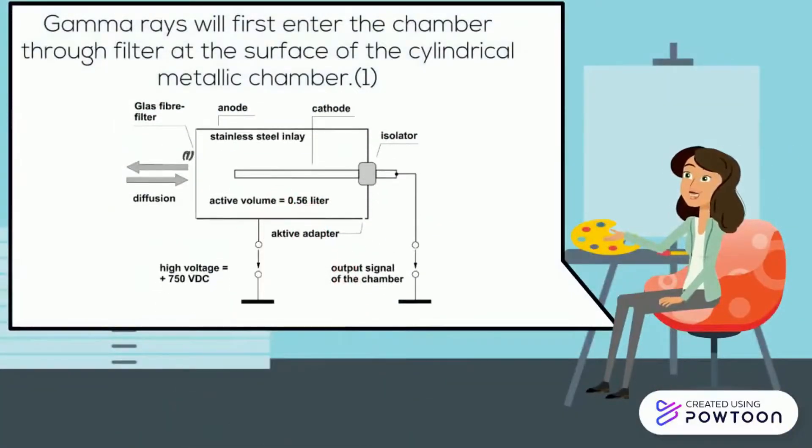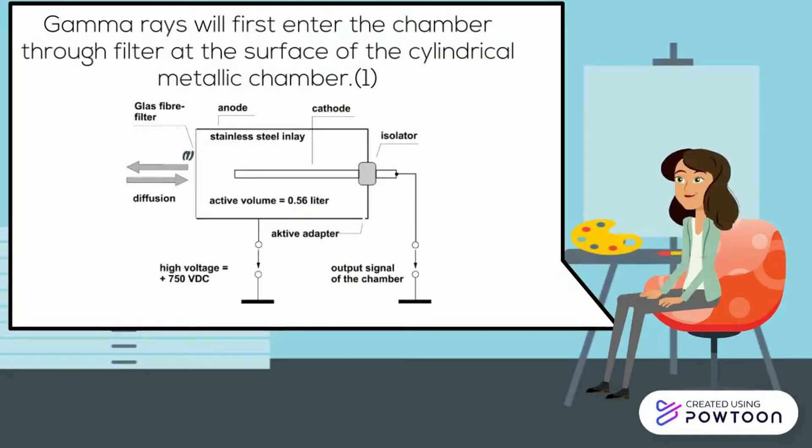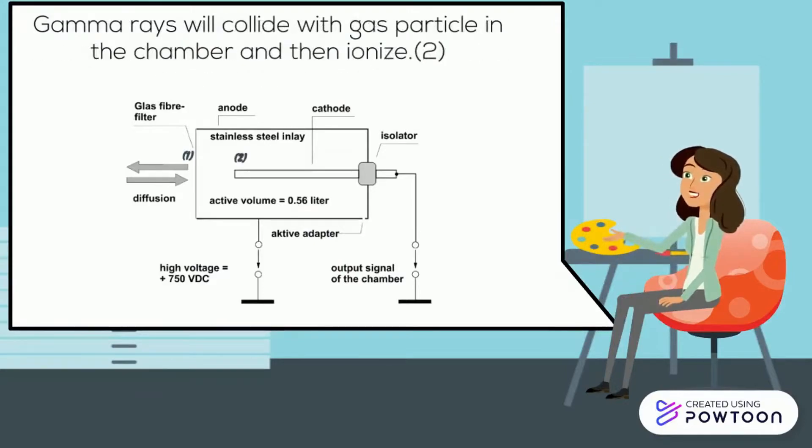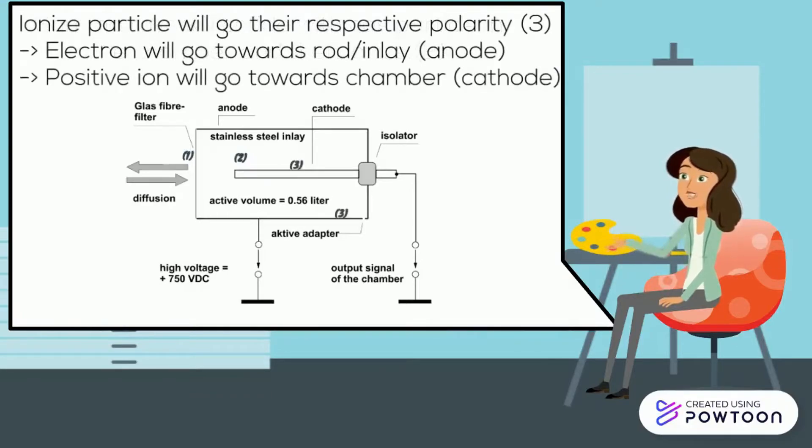First, gamma rays will enter the chamber through filter at the surface of the cylindrical metallic chamber. Second, gamma rays will collide with gas particles in the chamber and then ionize. Then, ionized particles will go to their respective polarity. Electrons will go toward rod at anode and positive ions will go toward chamber at cathode.